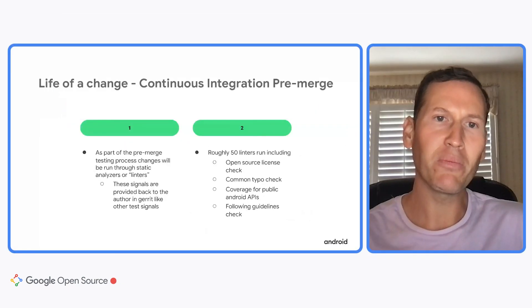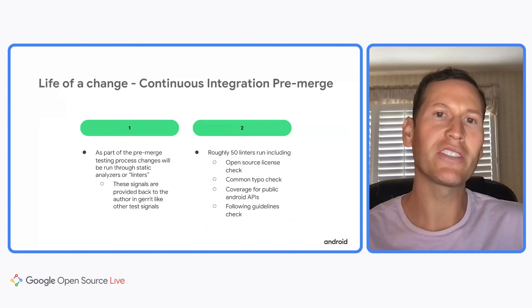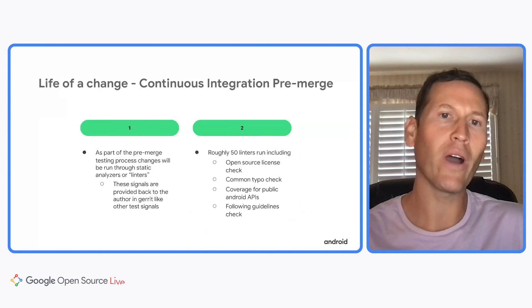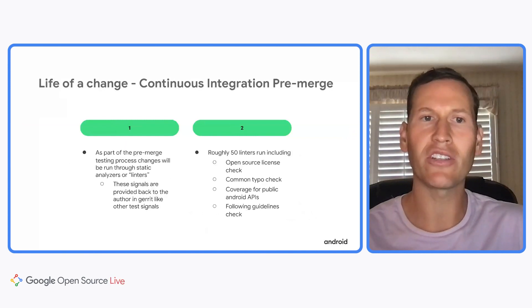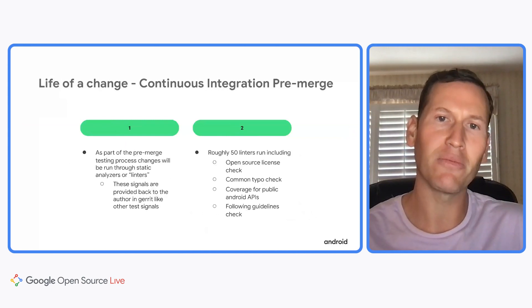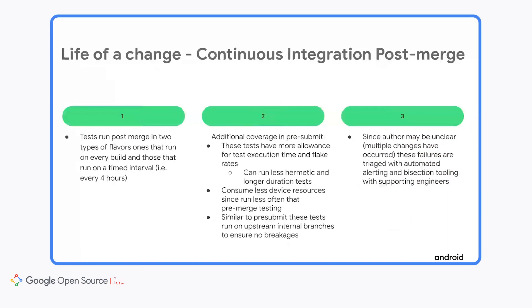As part of the pre-merge testing, changes go through a series of static analyzers, also known as linters, that check for a wide range of things, such as ensuring the correct licenses are there, API coverage, and ensuring code guidelines are met. Post-submit testing runs on every build or on a set timed cadence, for example, every four hours. These tests can be less hermetic and take longer. Since there are multiple changes that may have occurred, they need to be triaged through automated alerting and bisection tooling.